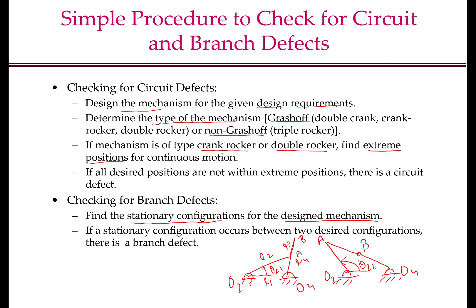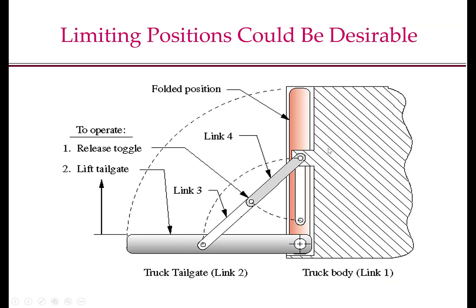Now let us see an example where being at a stationary configuration is useful and desirable. The mechanism shown is that for opening or closing a truck tailgate. The truck body is link 1, the tailgate is link 2, and links 3 and 4 complete the mechanism. When the tailgate is open, link 3 and link 4 are collinear. In this configuration, you can apply a large amount of load on the tailgate. The reaction at this pin will be along this direction, so there will be no moment about the pivot — theoretically, this tailgate can support an arbitrary amount of load, limited practically only by the mechanical strength of the components.